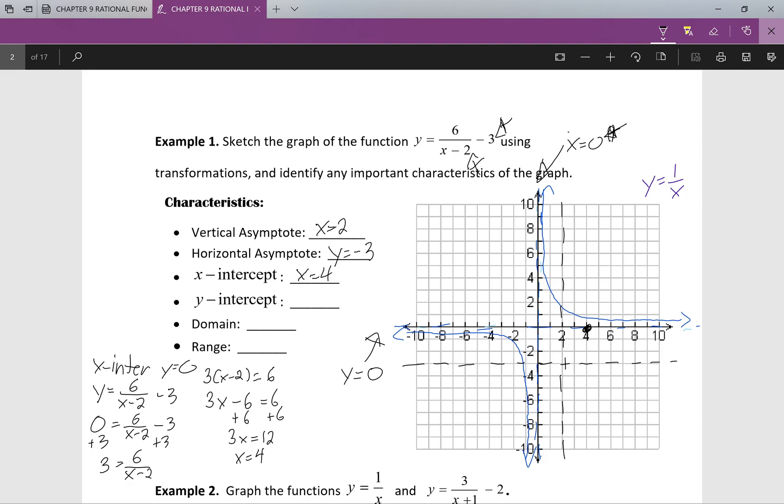My y-intercept occurs when x equals 0. I'm just going to quickly erase off this y equals 0 part right here to give myself a little bit more room to write. So, my y-intercept occurs when x equals 0. We look at this. y equals 6 over x minus 2 minus 3. y equals 6 over 0 minus 2 minus 3. 6 divided by negative 2 will give me negative 3. So, I get y equals negative 3 minus 3, or y equals negative 6.